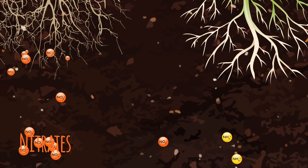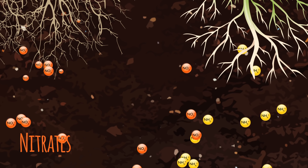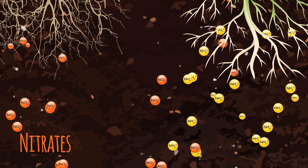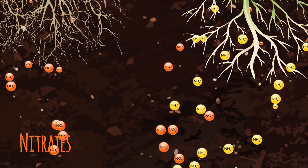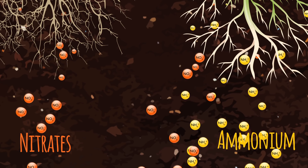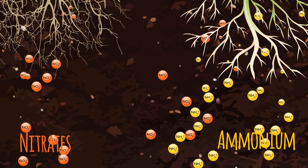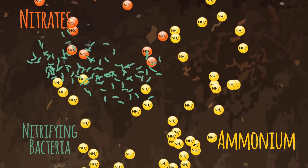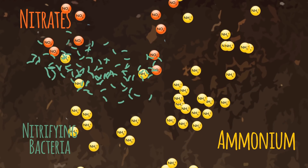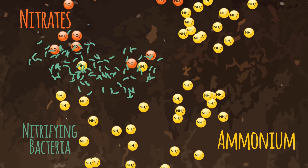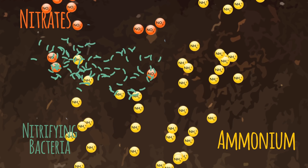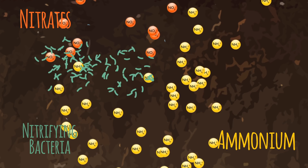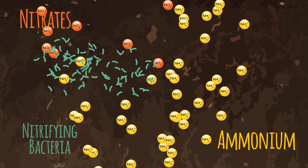Most other plants require some nitrates too, but they need more of a different form of nitrogen called ammonium. In a natural soil where no fertilizers have been added, nitrogen is readily available as ammonium. Some of this is converted to nitrates by a particular group of bacteria known as nitrifying bacteria.